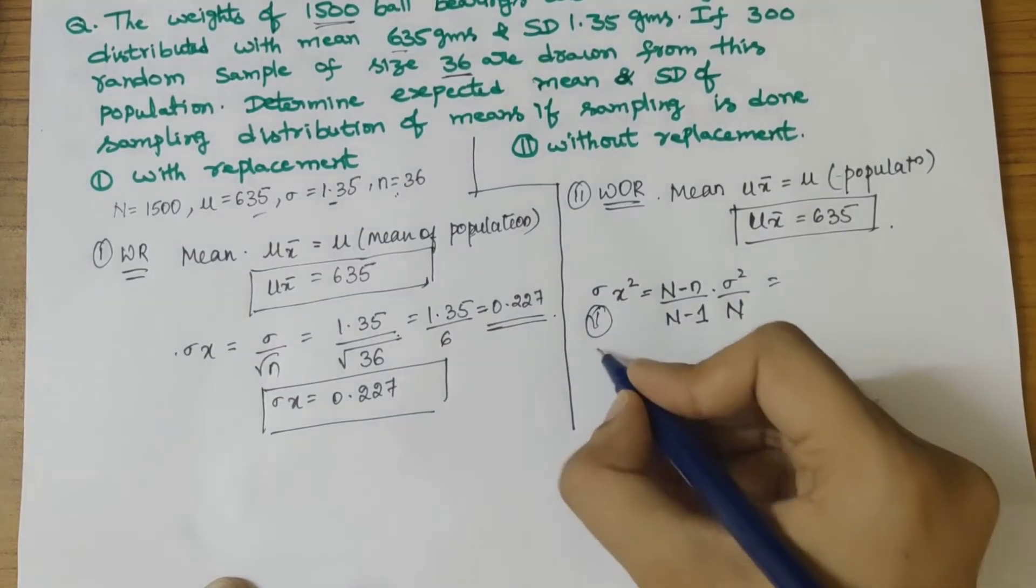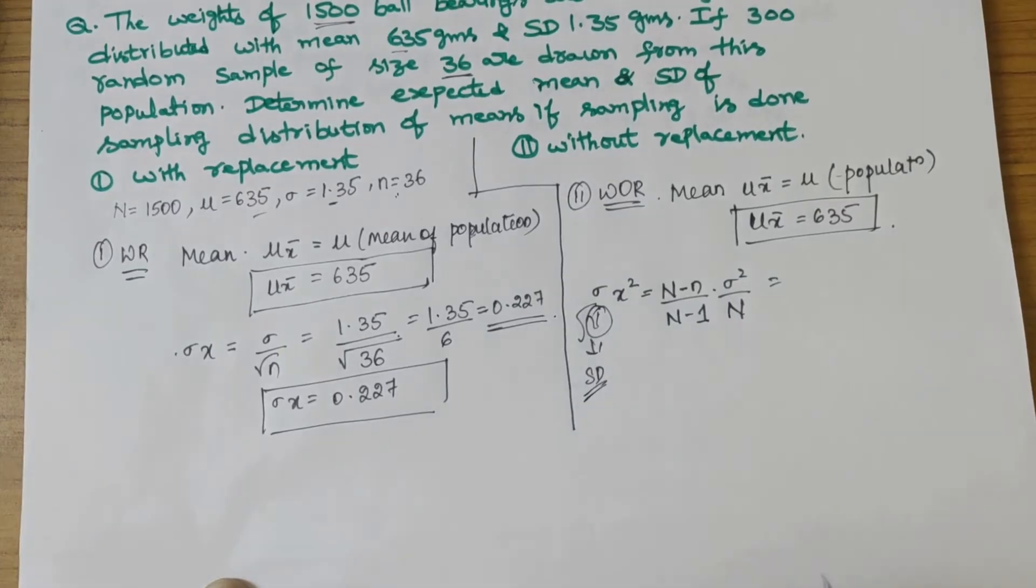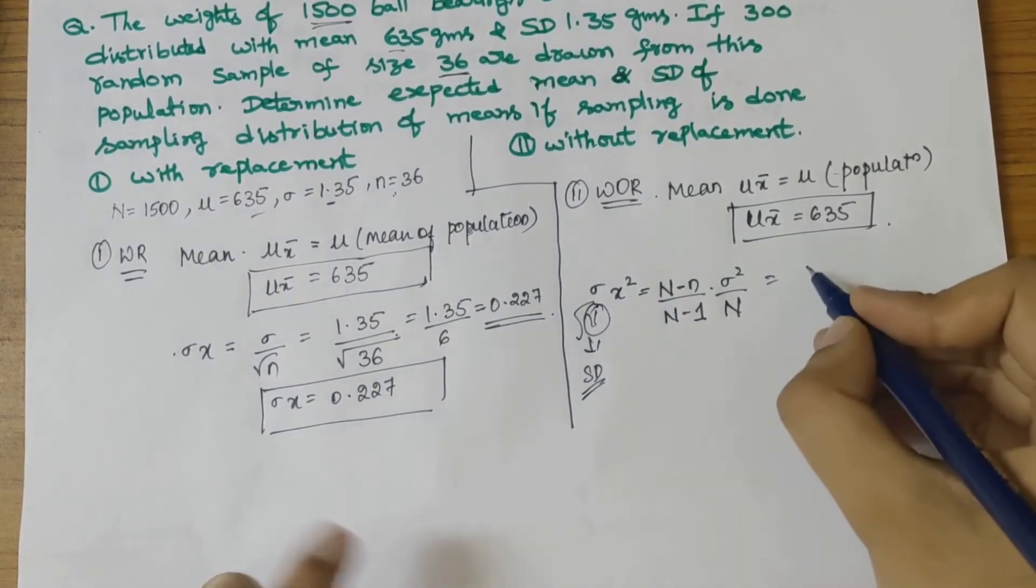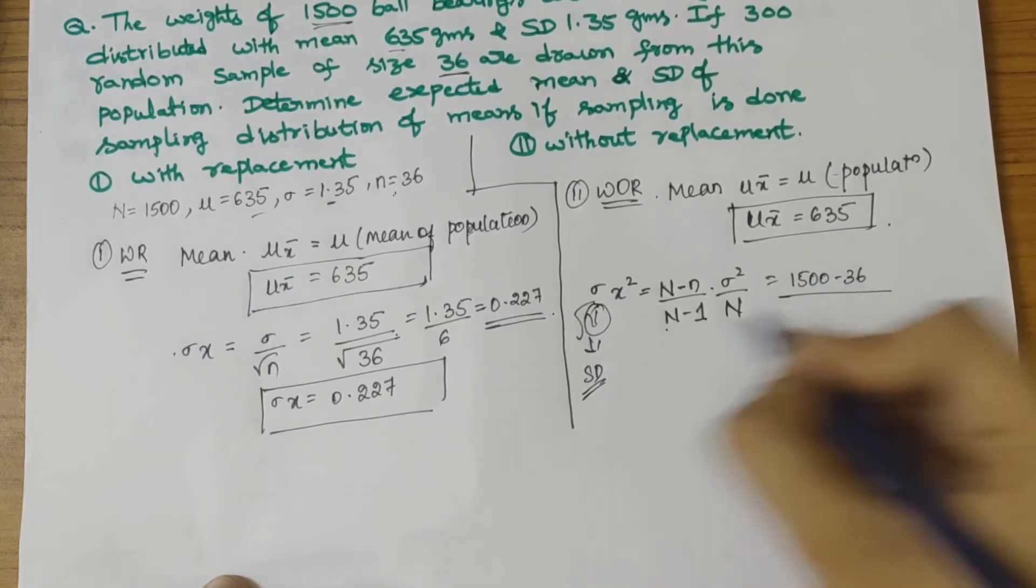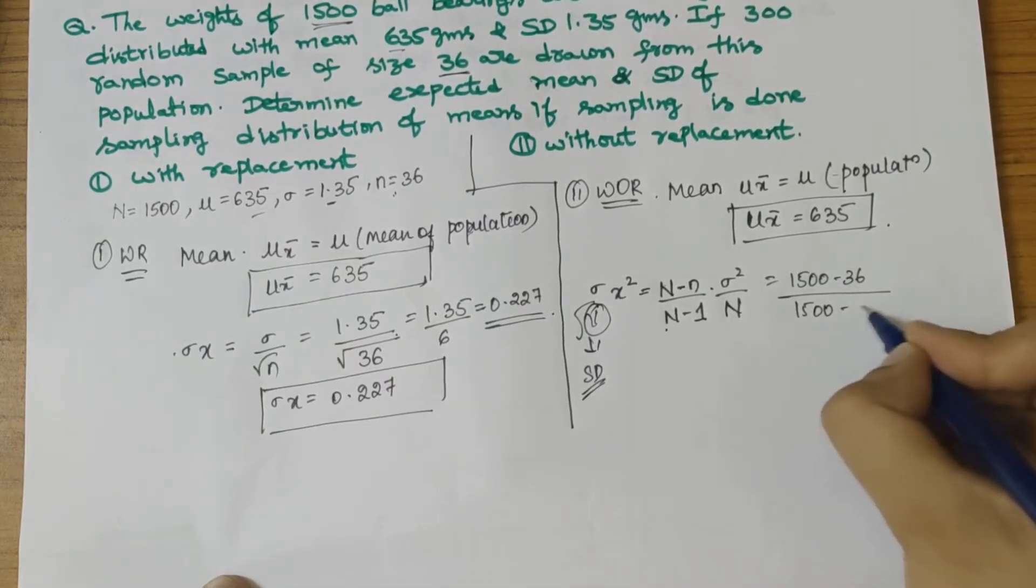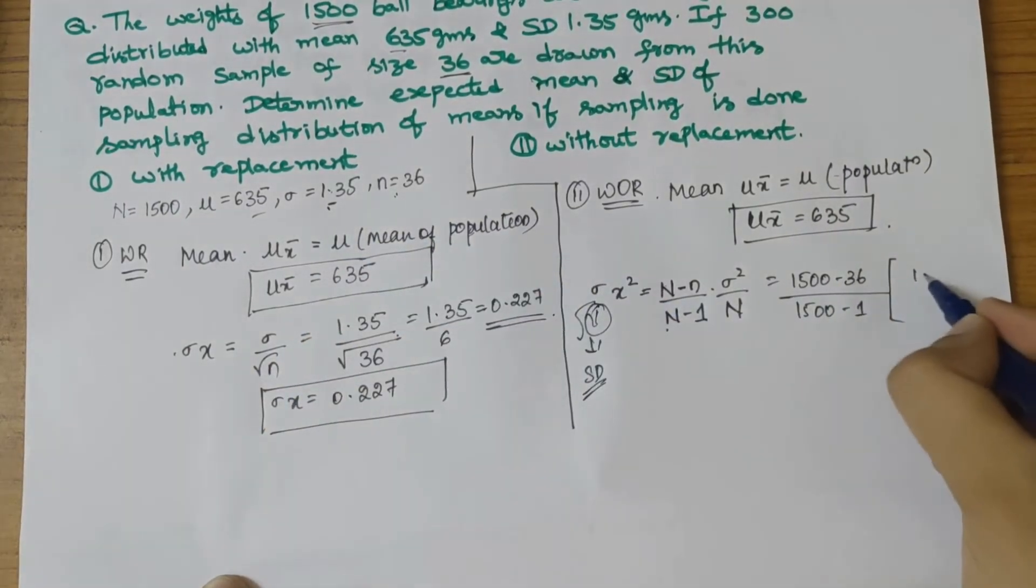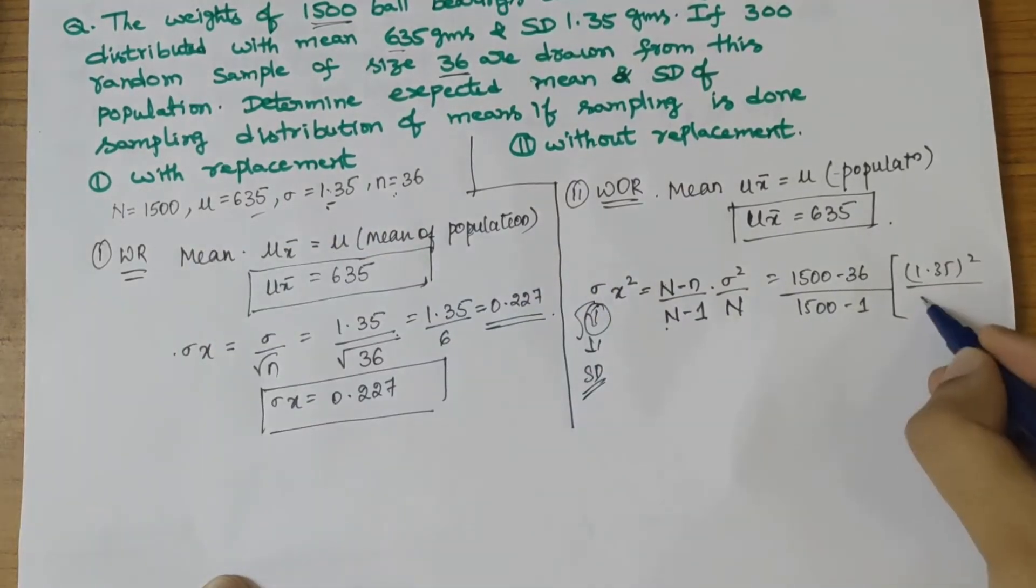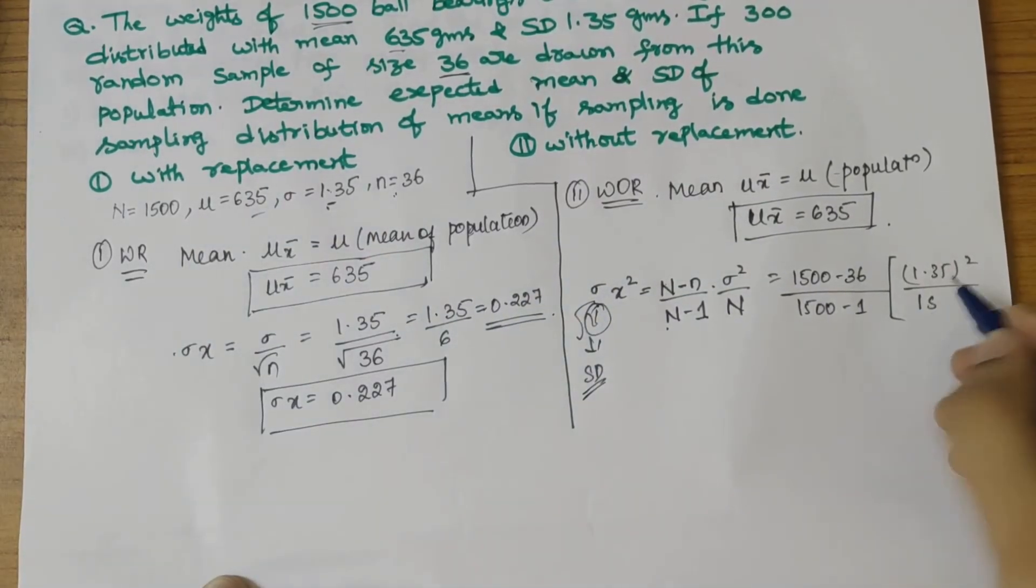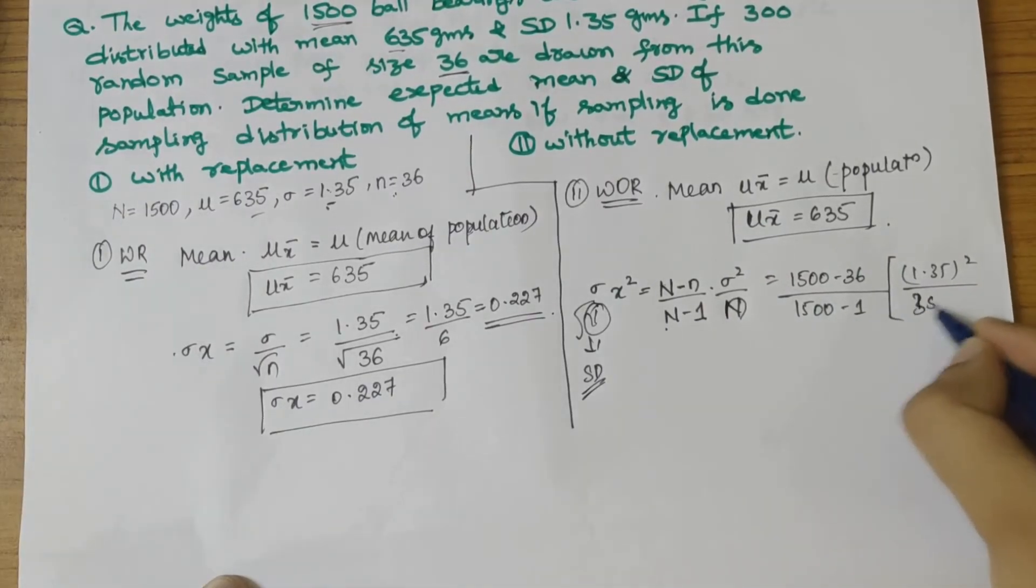Let's find the variance, then take its square root to get the standard deviation. We have (1500-36)/(1500-1) × (1.35)²/36.